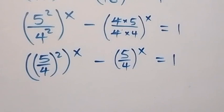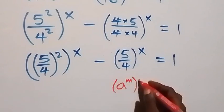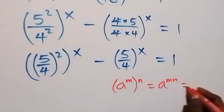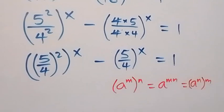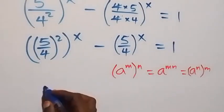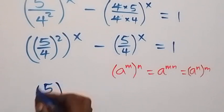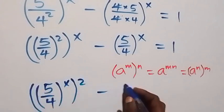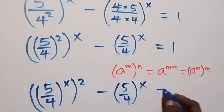Then on the law of indices, we have a raised to power n raised to power m is the same as a raised to power nm, which is also the same as a raised to power mn. So from here we can interchange this power, and this becomes (5/4)^x all squared, minus (5/4)^x, now equals 1.